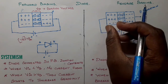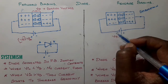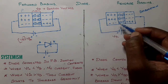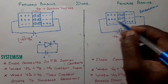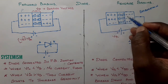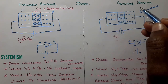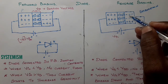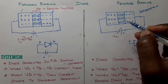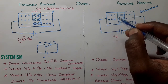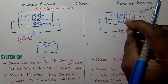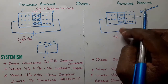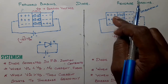In reverse bias, the N-type is connected to the positive terminal and P-type to the negative terminal, causing the depletion layer to expand. After the reverse voltage exceeds the breakdown voltage, the junction breaks down, the current increases very fast, and this damages the diode.